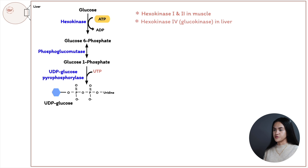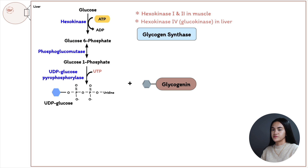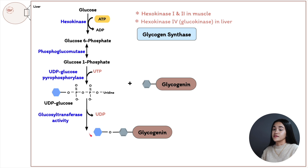UDP-glucose is the glucose residue donor to the growing molecule, catalyzed by glycogen synthase. Glycogen synthase is the enzyme that elongates the chain by adding new glucose residues. However, glycogen synthase cannot initiate glycogenesis — it first requires a primer of approximately eight glucose residues. A protein called glycogenin serves as both the primer and the enzyme catalyzing the first eight reactions of the new chain. A glucose residue from UDP-glucose is transferred to the hydroxyl group of glycogenin, catalyzed by glycogenin's glycosyltransferase activity.